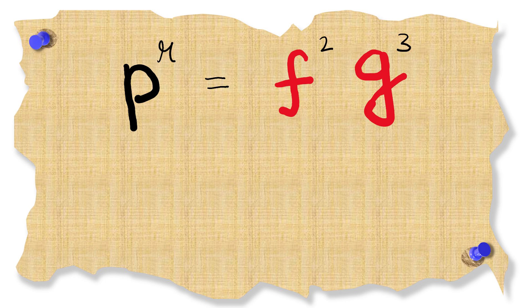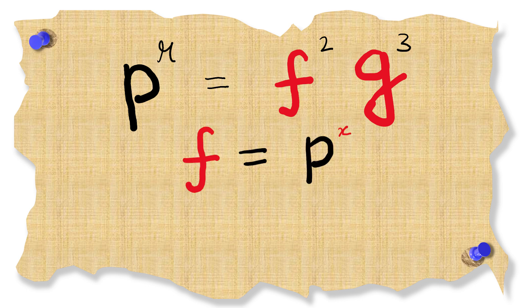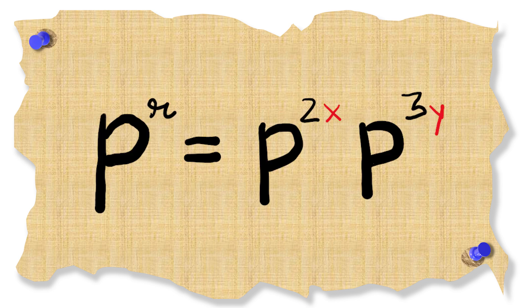If p to the r is equal to some f squared times g cubed then we can see that f and g can only be divisible by some prime p and nothing else. So we get that f is p to the x and g is p to the y. Plugging these back in we see that p to the r is p to the 2x times p to the 3y.